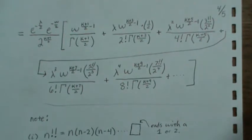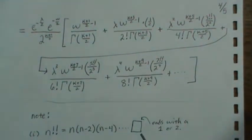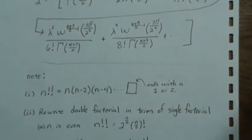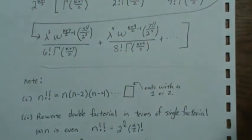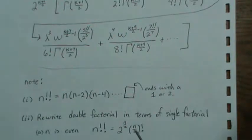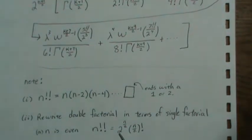So again note that a double factorial is written like this. And if n is even double factorial can be rewritten as this. So n raised to the n over 2, n over 2 factorial. And I'm not going to prove it. It's a pretty straightforward proof.